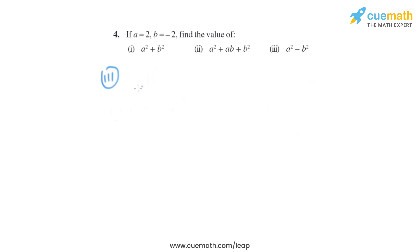Now let's move on to the third part. The expression that is given is a squared minus b squared. So it will be 2 squared minus minus 2 squared. So 2 squared is basically 4 and minus 2 squared is basically 4 as well, so it will be 4 minus 4 which is same as 0.